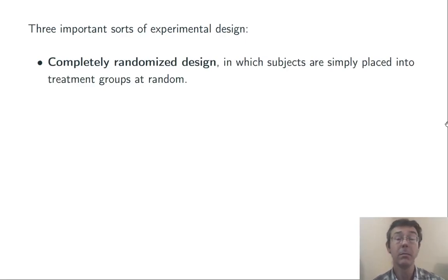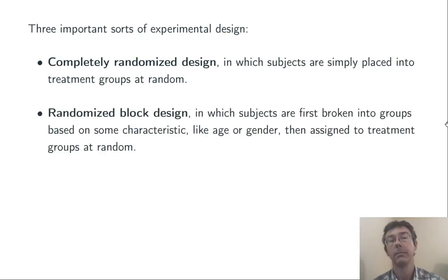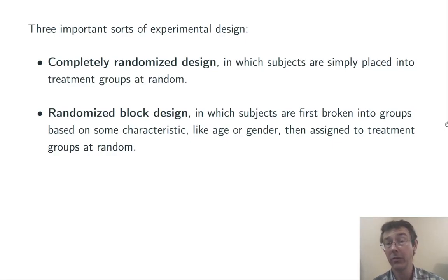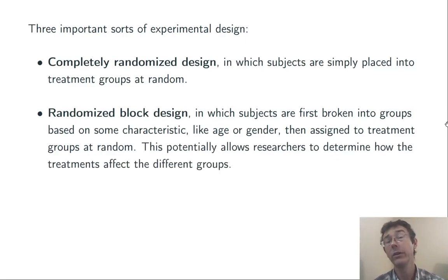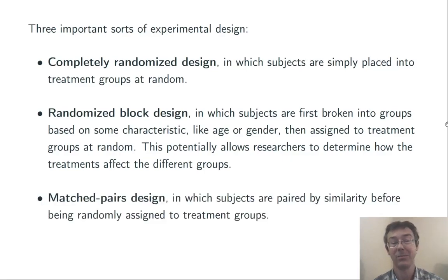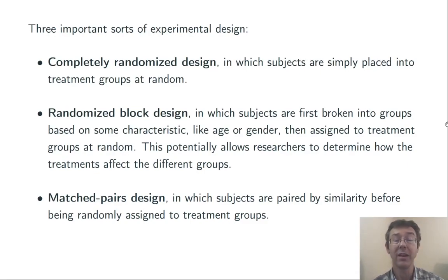Here are three important sorts of experimental design to keep in mind. First, completely randomized design: subjects are simply placed into different treatment groups at random. Second, randomized block design: subjects are first broken into groups based on some characteristic like age or gender, and then assigned to different treatment groups at random — so we might run an experiment on people over 50, between 40 and 50, and so on. This potentially allows researchers to determine how the treatment affects different groups differently. Finally, a special sort of randomized block design is the matched pair design, in which subjects are paired by similarity before being randomly assigned to different treatment groups, and results can then be compared one to one.